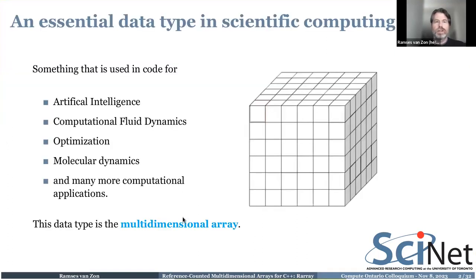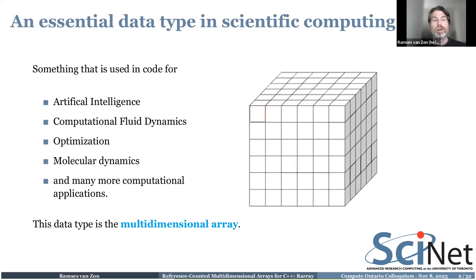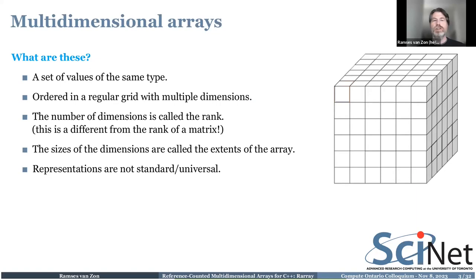What we're talking about is an essential data type in scientific computing that has caused me great headaches when trying to use C++, and those are multi-dimensional arrays. These data types occur in all kinds of scientific computing — heavily in artificial intelligence as the tensors of TensorFlow, computational fluid dynamics, optimizations, molecular dynamics. They're essentially a set of values of the same type organized in a grid.